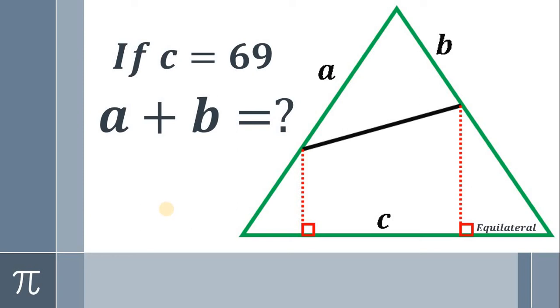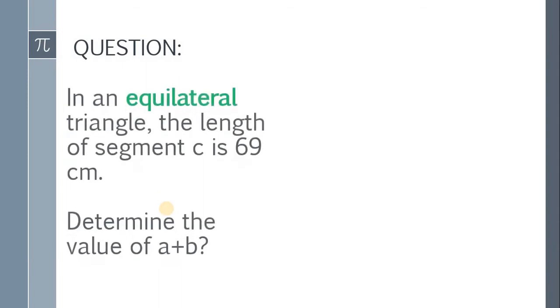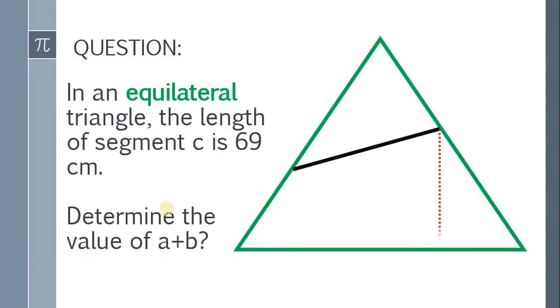Good day everyone. Let's try to answer some problem posted on Facebook. So, let's start. Here's the question. In an equilateral triangle, the length of segment C is 69 cm. Determine the value of A plus B.